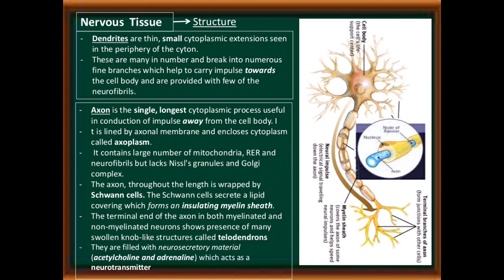The axon is lined by an axonal membrane and encloses cytoplasm called axoplasm. It contains a large number of mitochondria, rough endoplasmic reticulum, and neurofibrils, but lacks Nissl granules and Golgi complex. The axon throughout its length is wrapped by Schwann cells, which secrete a lipid covering forming an insulating myelin sheath. The terminal ends of the axon show many swollen knob-like structures called telodendrons, filled with neurosecretory materials — acetylcholine and adrenaline — which act as neurotransmitters.